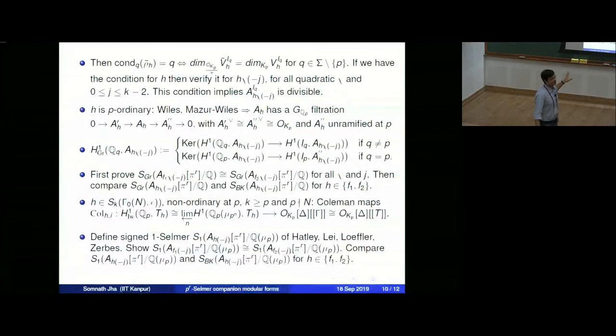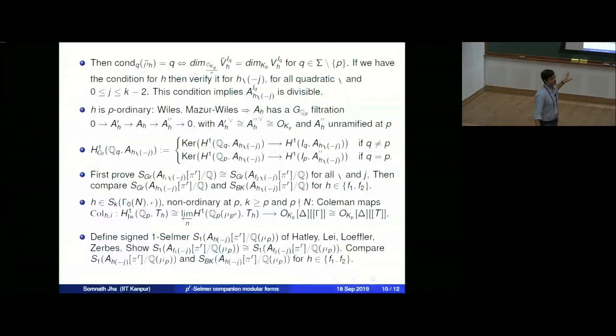That conjecture — that near-Selmer companion implies congruence — is also worth investigating because it captures the congruence in some sense, but it seems difficult.